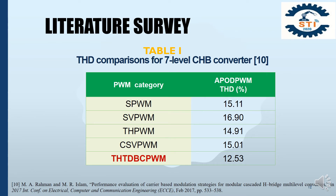Table 1 shows the THD performance for 7-level CAPIT-HB inverters. From this table, we can see that the lowest THD is offered by THTD-BCPWM, and the highest THD is offered by HVPWM. So we can say that among the mentioned topologies, the THTD-BCPWM offers better performance.